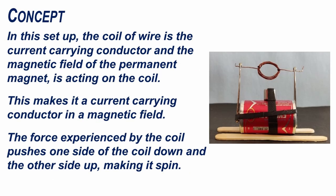In this setup, the coil of wire is the current carrying conductor and the magnetic field of the permanent magnet is acting on the coil. This makes it a current carrying conductor in a magnetic field. The force experienced by the coil pushes one side of the coil down and the other side up, making it spin.